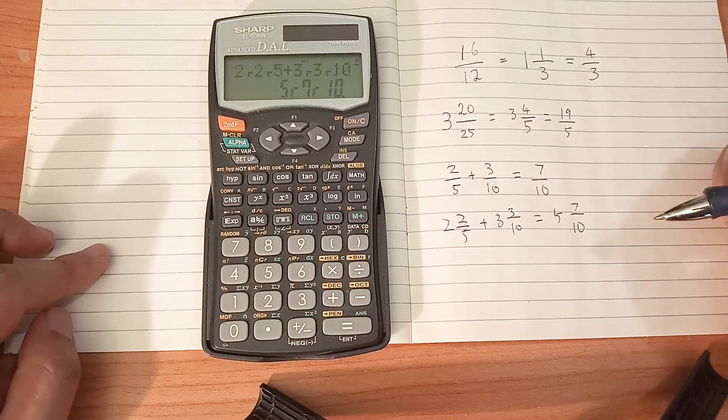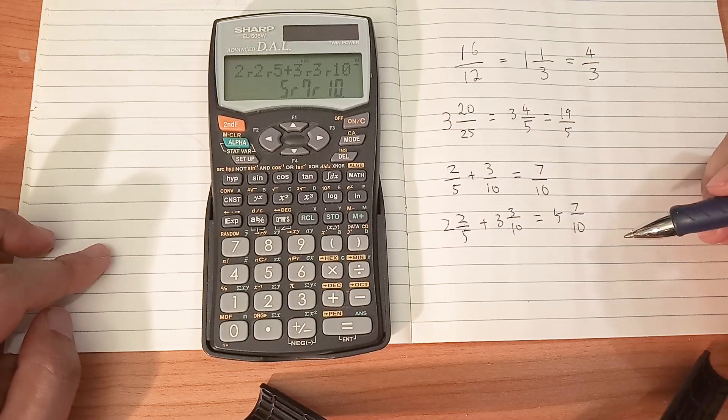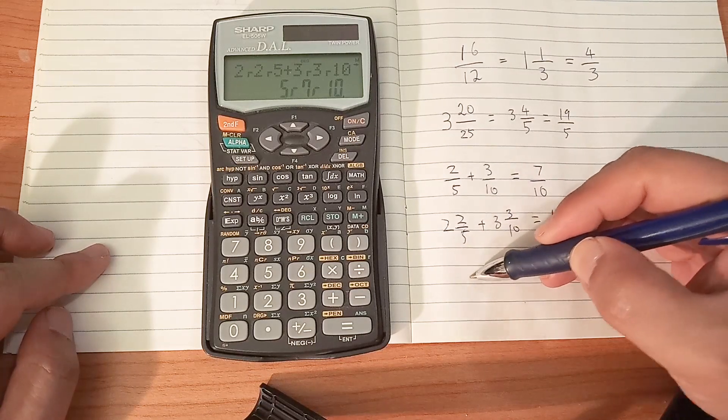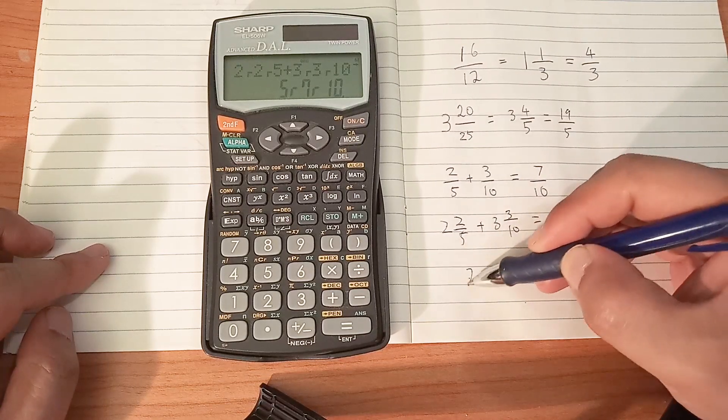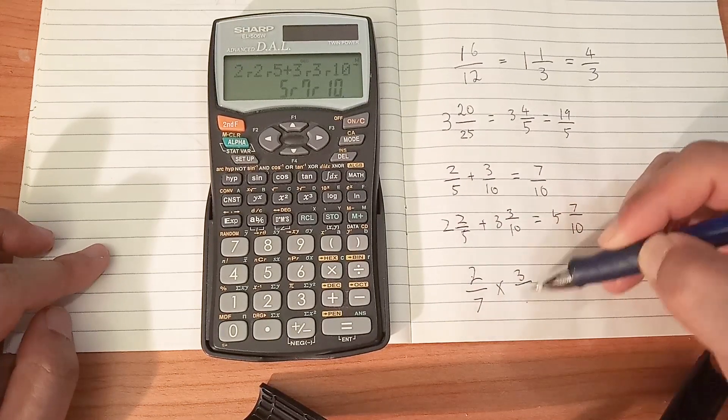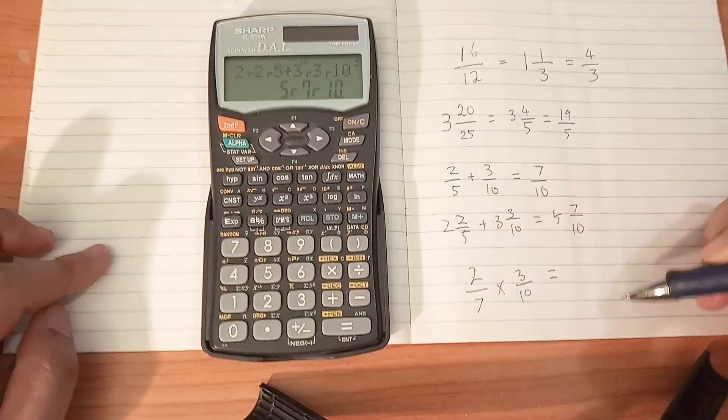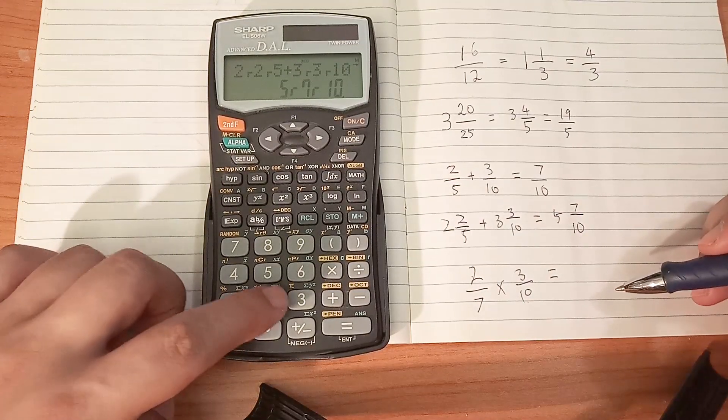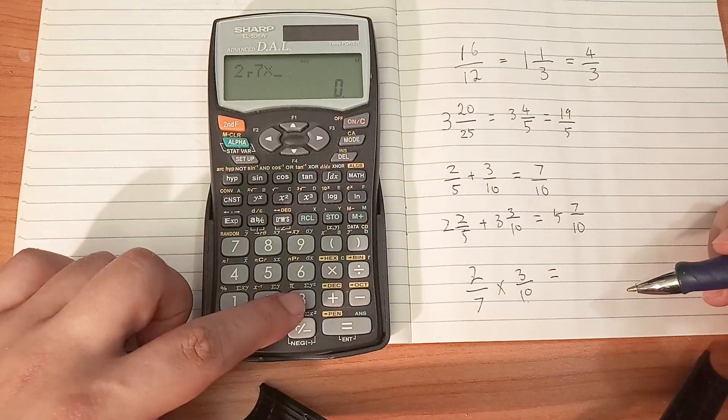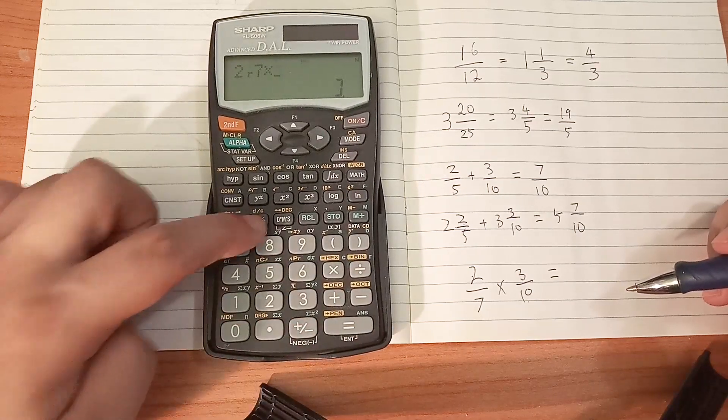Let's finish off with some multiplying. Let's do 2 over 7 times 3 over 10. So enter 2 over 7 times 3 over 10.